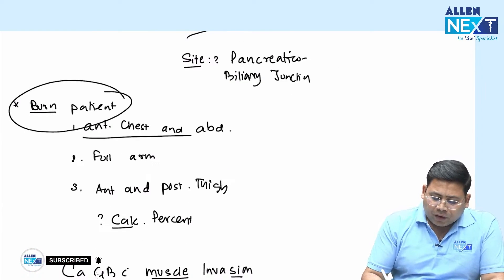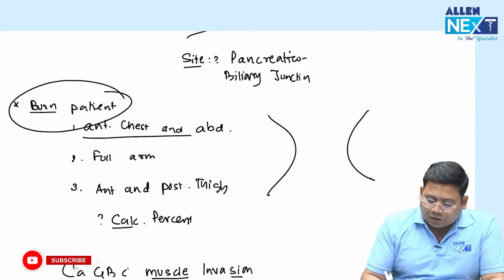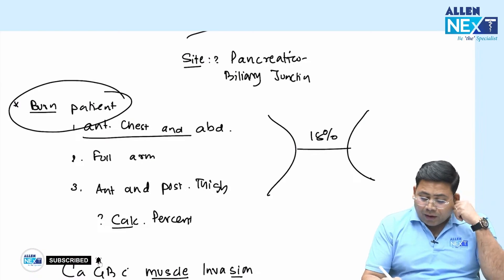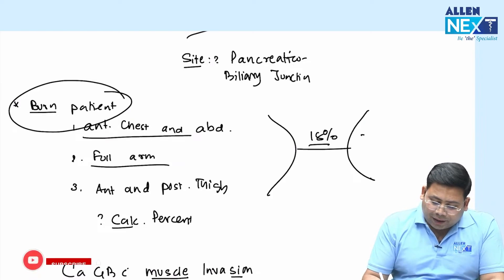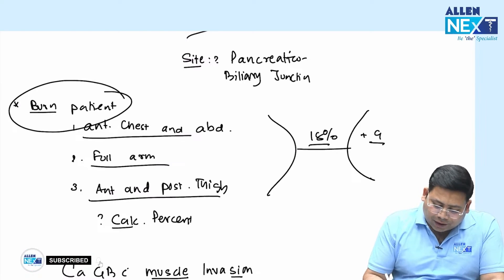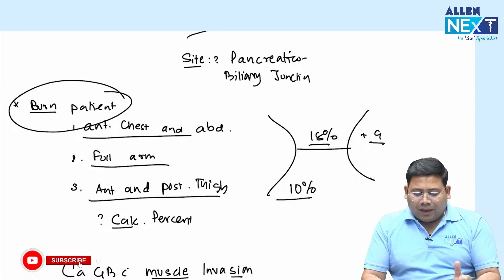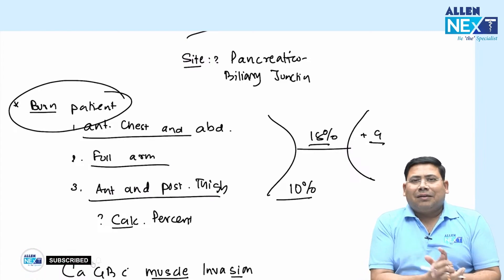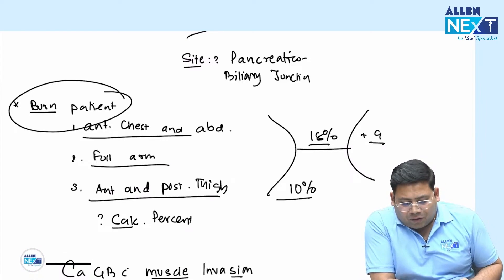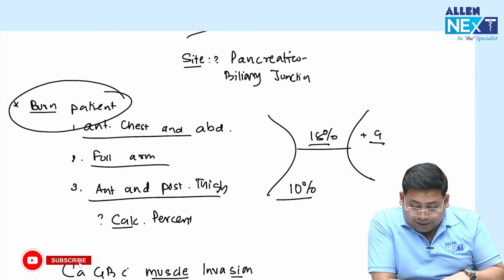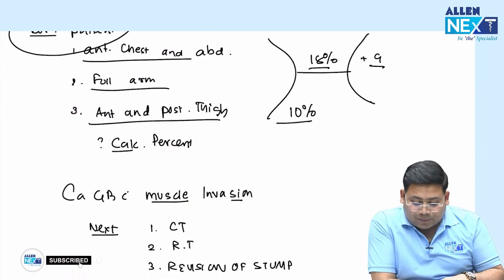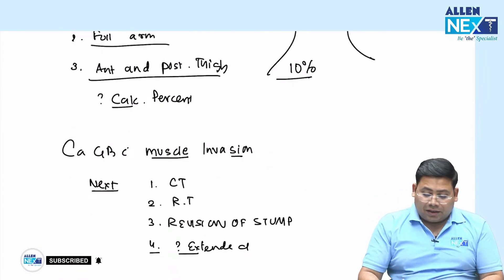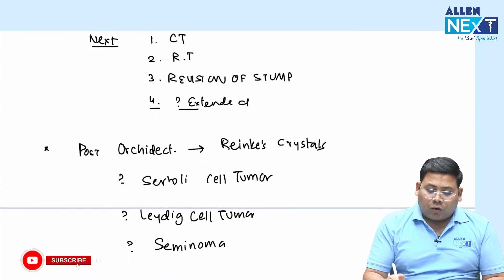A burn patient with burns involving the anterior chest and abdomen: anterior chest and abdomen = 18 percent. Full arm = 9 percent. Anterior and posterior thigh — taking it as approximately 5 percent each — the total comes out to approximately 35 to 36 percent. That is the answer.